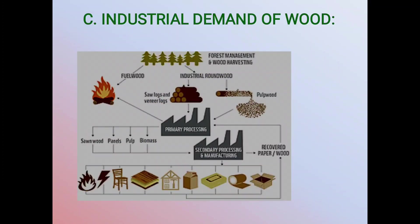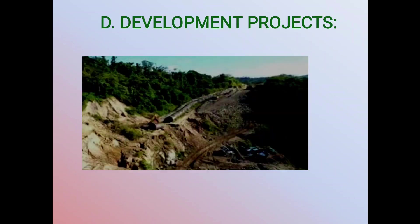The next cause of deforestation is industrial demand for wood. Forests provide wood for construction of houses, making furniture, plywood, packing cases, pulp for paper industry, match boxes, pencils, etc. At present, plywood is in great demand for making doors, windows, packing cases for tea and apple, furniture, etc. In India, industrial requirement of wood is estimated to be about 40 million cubic metres, out of which about 50% is met by bamboo plantation. It has been observed that poorly performed commercial logging causes degradation of the forest.